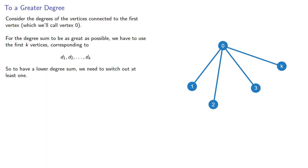So to have a lower degree sum, we need to switch out at least one. Say we switch out vertex i with vertex j. Now, if the two degrees are equal, the degree sum is still the greatest possible, so we'll assume d_i is strictly greater than d_j.